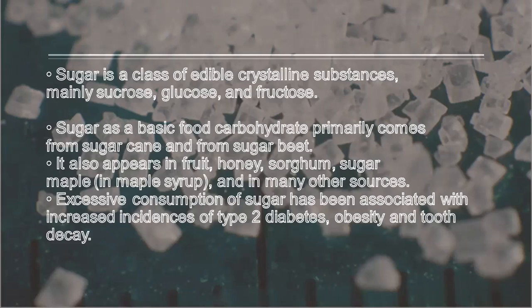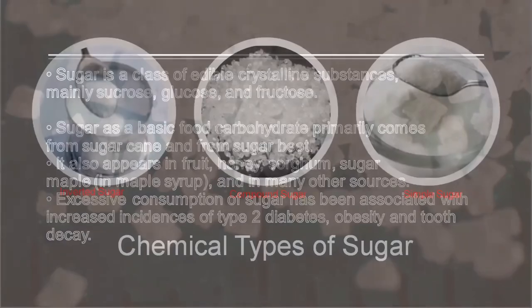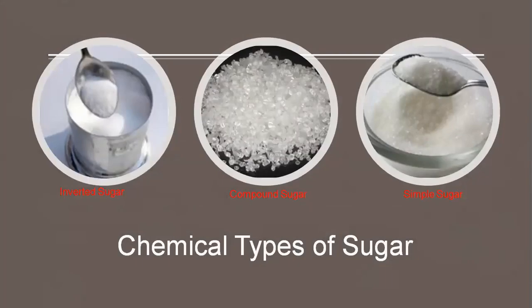Excessive consumption of sugar has been associated with increased incidence of type 2 diabetes, obesity, and tooth decay. Now, chemically speaking, there are three types of sugar: simple sugar, compound sugar, and invert sugar.